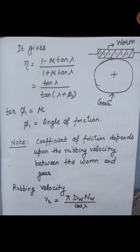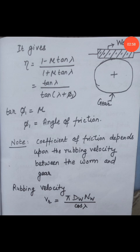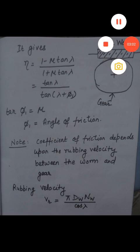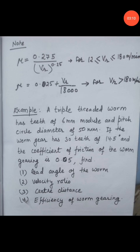One important thing to note is that the coefficient of friction depends upon the rubbing velocity between the worm and the gear. Rubbing velocity is given by Vr equals π·dw·Nw upon cos(λ). The relationship between μ and rubbing velocity is: μ equals 0.275 divided by Vr raised to the power 0.25.